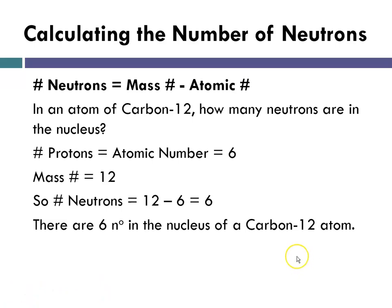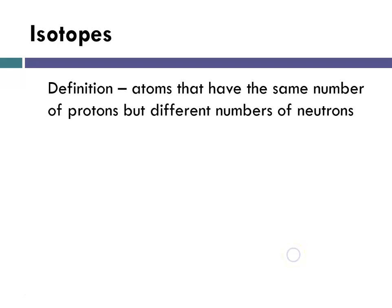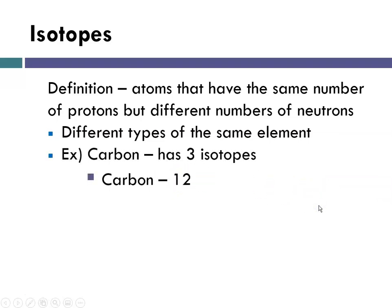Why are we calling it carbon-12? It turns out that atoms have something called isotopes — those are atoms of the same element that have the same number of protons but different numbers of neutrons. Neutrons have mass, so isotopes must have the same atomic number, because if they didn't they wouldn't be the same element, but by having different numbers of neutrons they will have different mass numbers. Carbon has three known isotopes: carbon-12, carbon-13, and carbon-14.